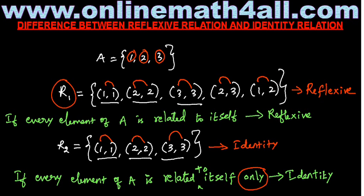I hope students can understand the difference between reflexive and identity. Reflexive means every element of A is related to itself — and an element can also be related to some other different element. But in identity, every element must be related to itself only and should not be related to any other different element. Also, all elements must be accounted for — no element should be missing. Since A = {1,2,3}, we need (1,1), (2,2), (3,3) and nothing more. That is identity.